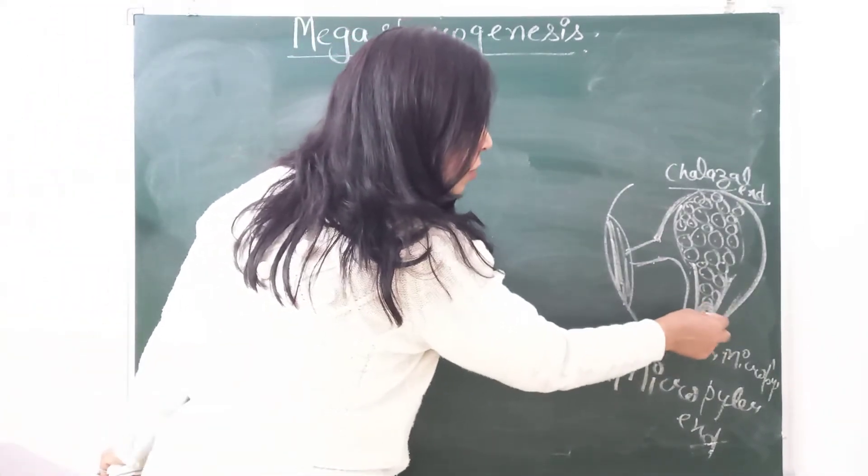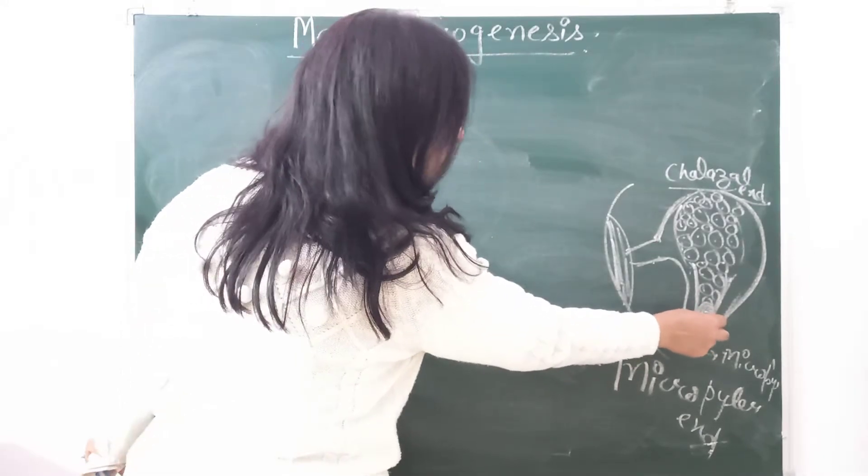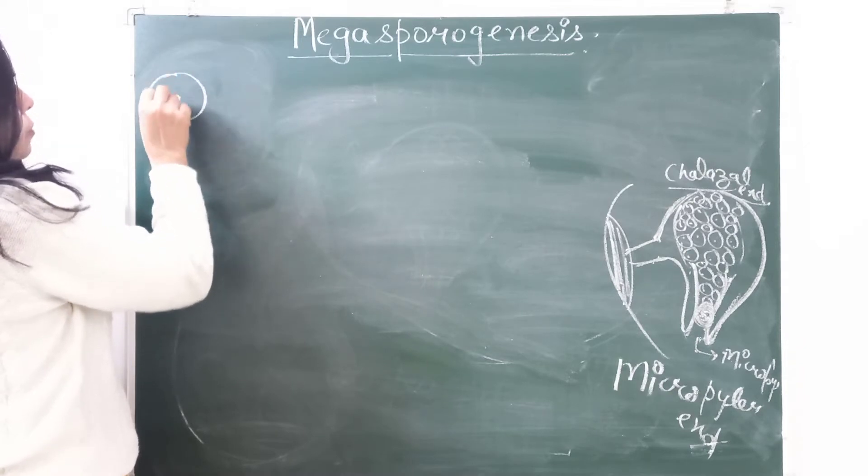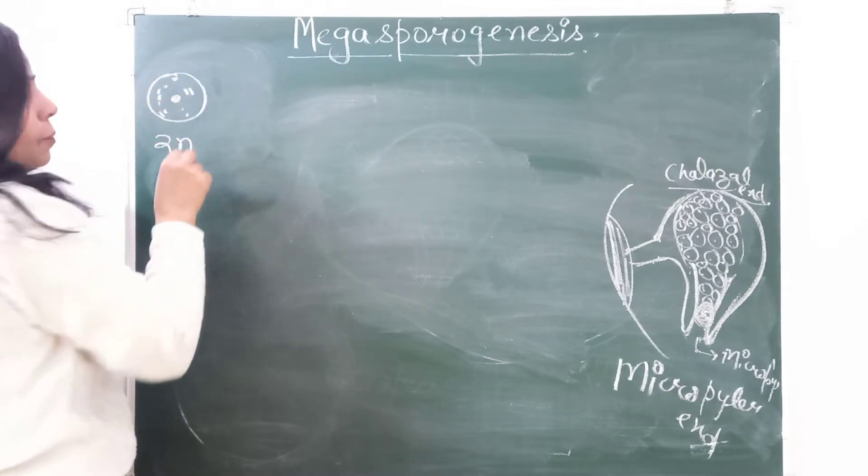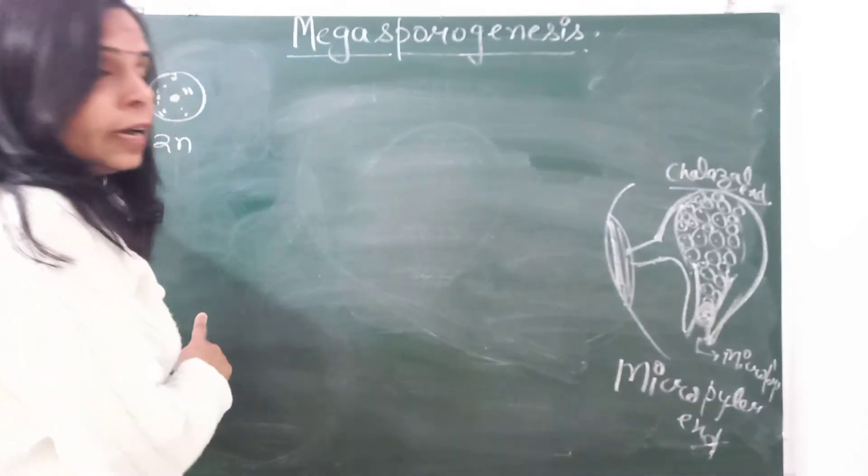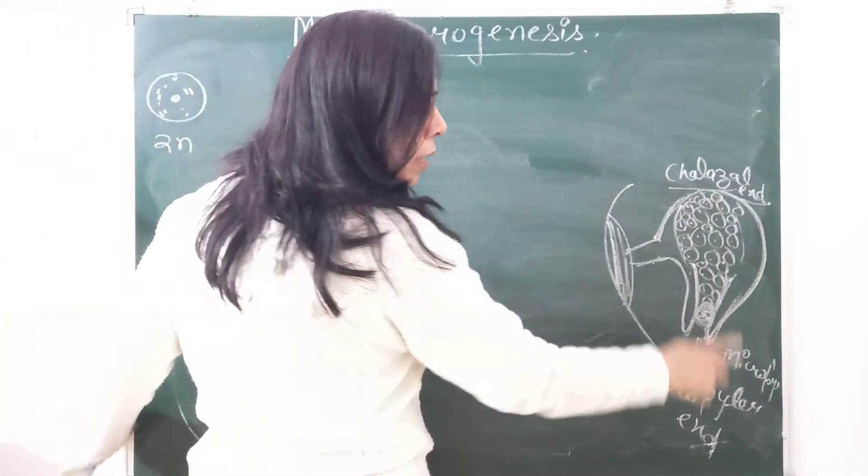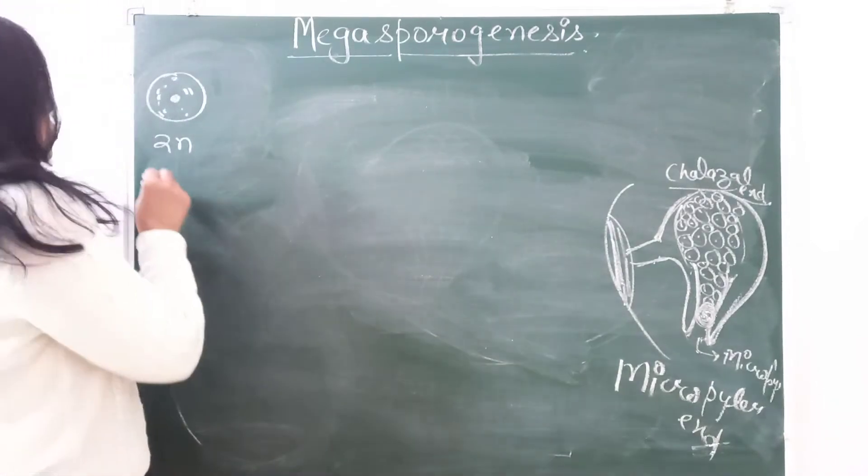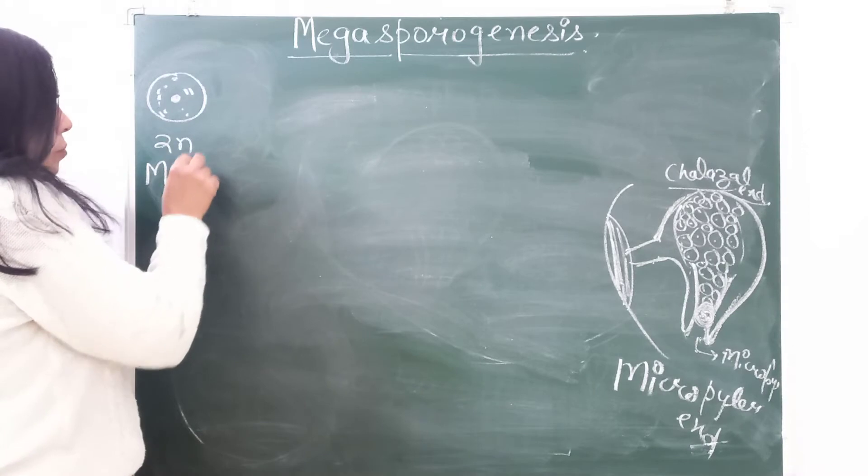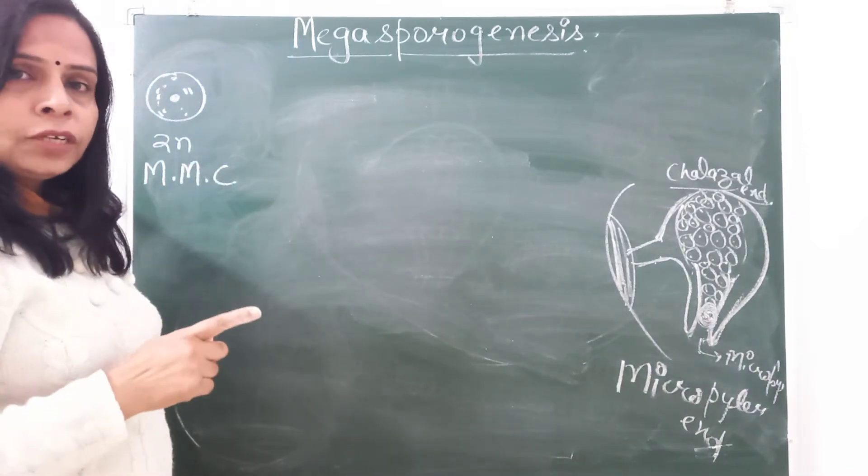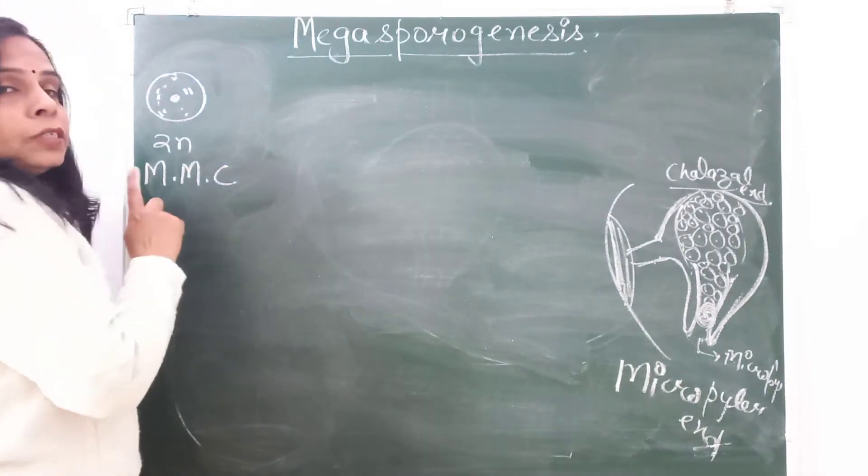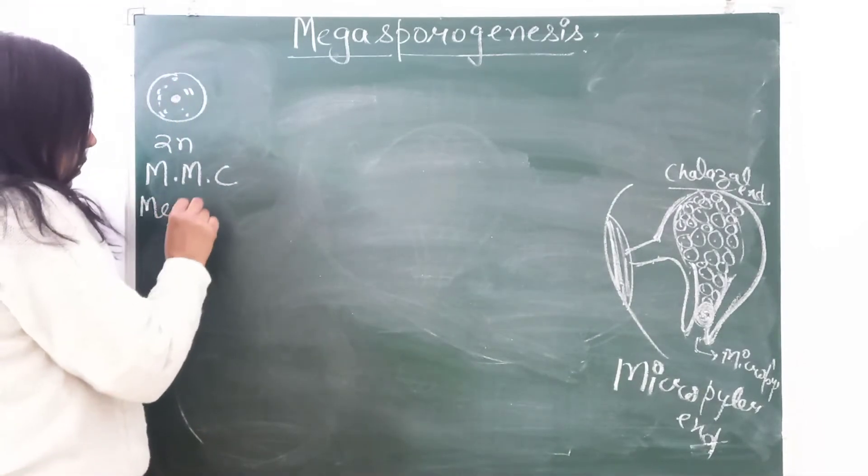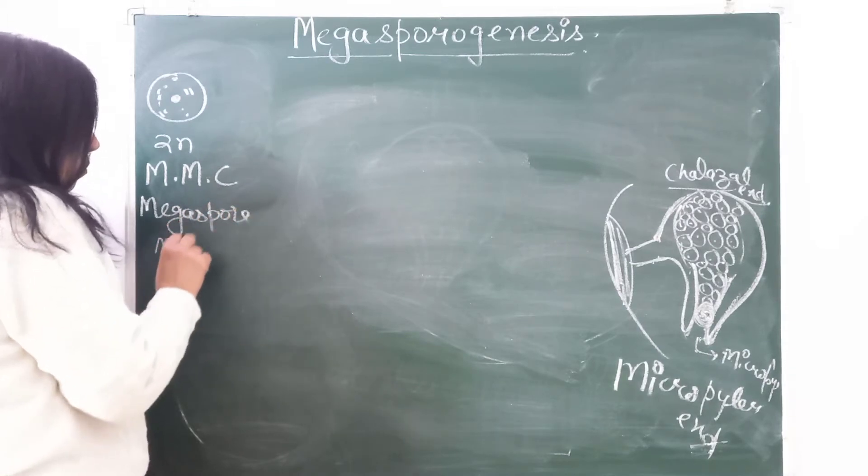Let me take this cell. This is megaspore mother cell. This is a diploid cell. This cell from the nucellar cells, any one cell towards the micropylar end, gets specialized and becomes megaspore mother cell. We call it MMC. In microsporogenesis we also had MMC, that was microspore mother cell, but here it is megaspore mother cell.